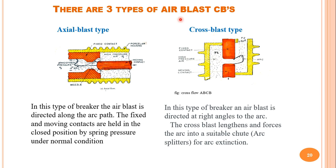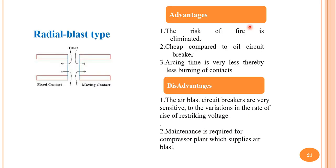There are mainly three types of air blast circuit breakers: axial blast, cross blast, and radial blast. In axial blast type, air flow is along the path of the ionized particles (the arc). Fixed and moving contacts are held in the closed position by spring pressure under normal conditions, released during faulty conditions. In cross blast type, air blast is directed at right angles to the arc path, lengthening and forcing the arc into a suitable chute for arc extinction. Radial blast combines the movement of both axial and cross flow of air.